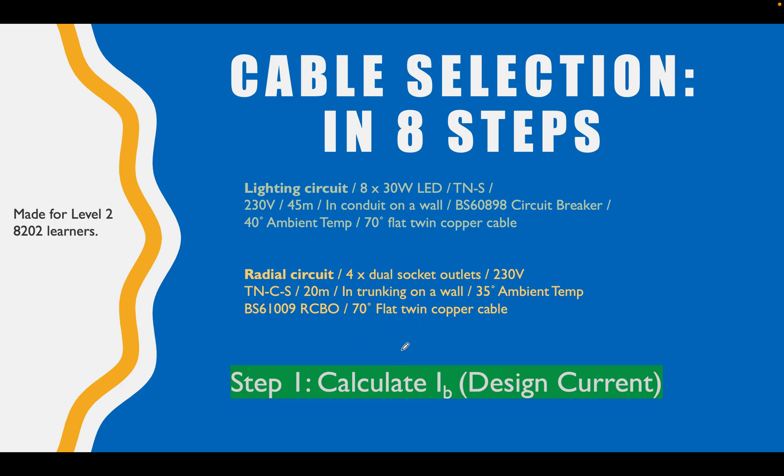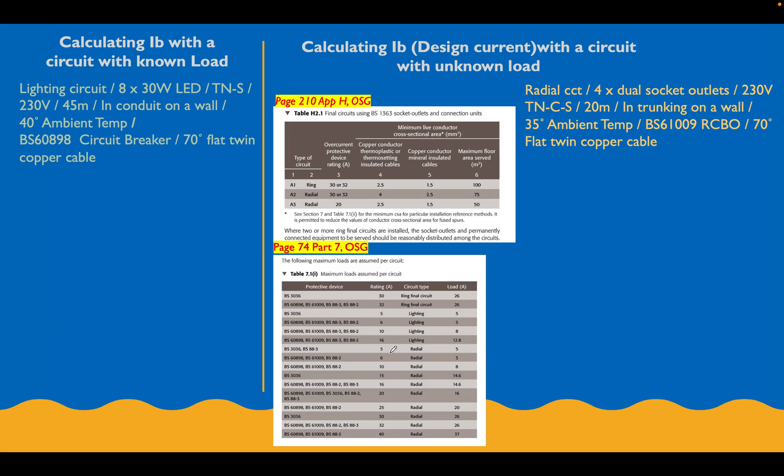Let's calculate the design current for both these circuits. Starting with our lighting circuit - we've got 8x30 watt LEDs, that's really the only bit we're interested in at the moment along with the 230 volts. We're calculating our design current which is our Ib. The Ib is our design current and that's going to be equal to the power rating of our circuit divided by the voltage. We're looking for the current, we need the power and the voltage - you'll recognize this triangle we've done many times. We're looking for this value, so we just divide power by voltage.